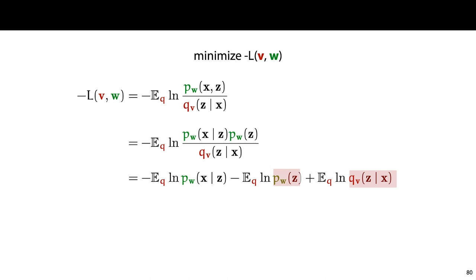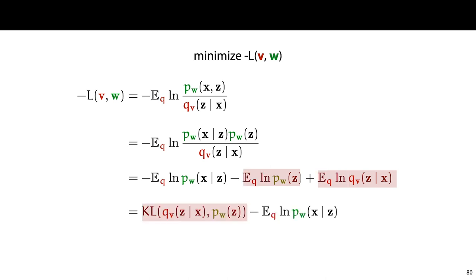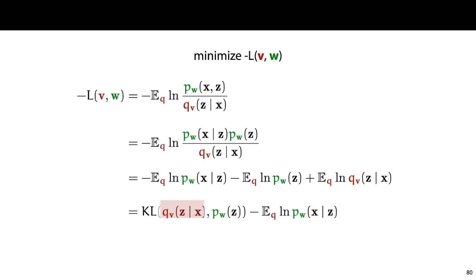We can take the two terms on the right back into the expectation and logarithm. This is equivalent to the KL divergence between the distribution that q puts on the latent space for input x and the marginal distribution that p puts on the latent space independent of x. From this we subtract the expectation of the log probability density on x given z under the model p. These are the three functions we can compute: qv(z|x) is our encoder network, pw(x|z) is our decoder network, and the marginal probability density on z under p is the standard normal distribution.